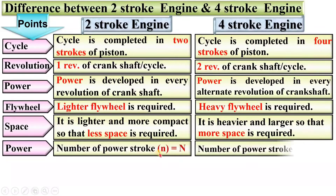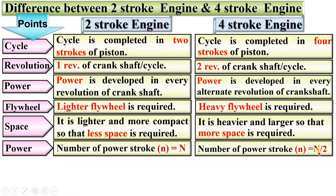Next, power strokes. The number of power strokes, generally indicated by small n, is exactly equal to n — that means the revolutions per minute of the crankshaft — in case of a two-stroke engine. But in case of a four-stroke engine, the number of power strokes is exactly equal to half of the revolutions of the crankshaft, because in the four-stroke engine power is developed in every alternate revolution. That's why it is n divided by 2.